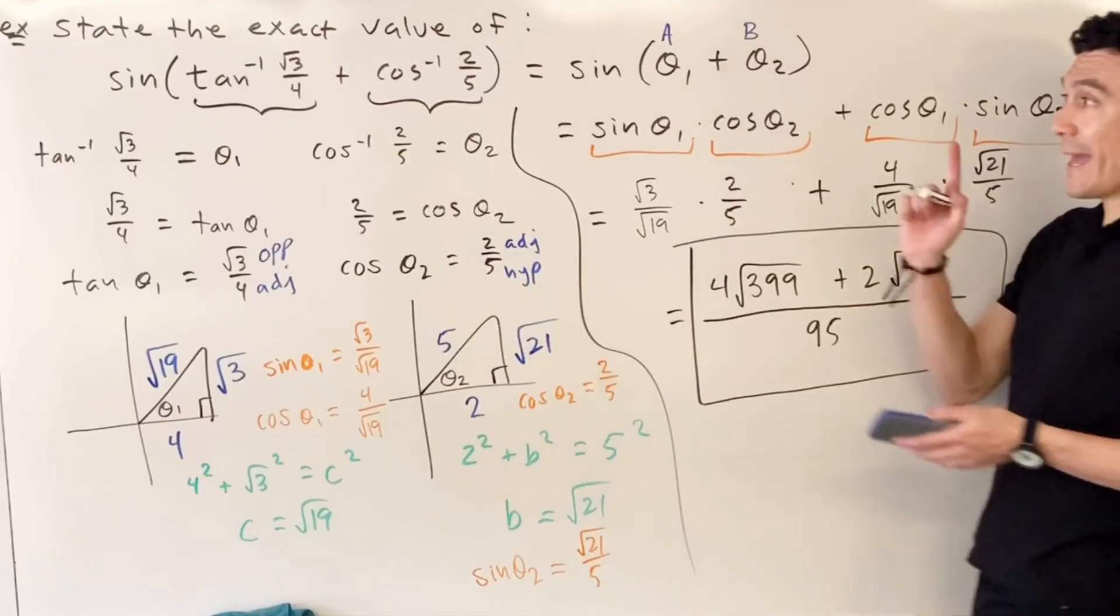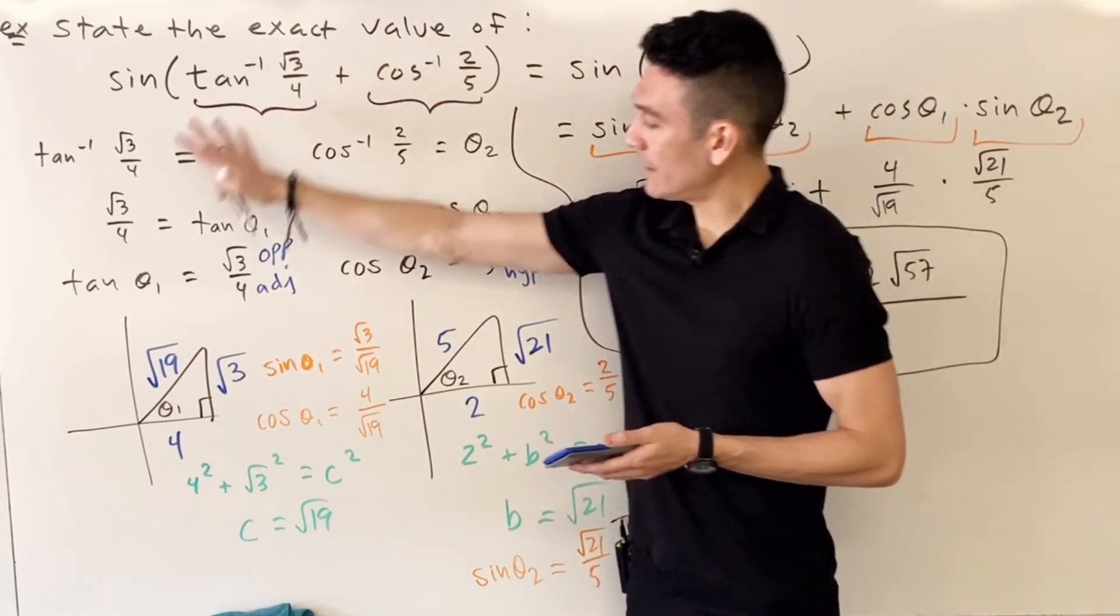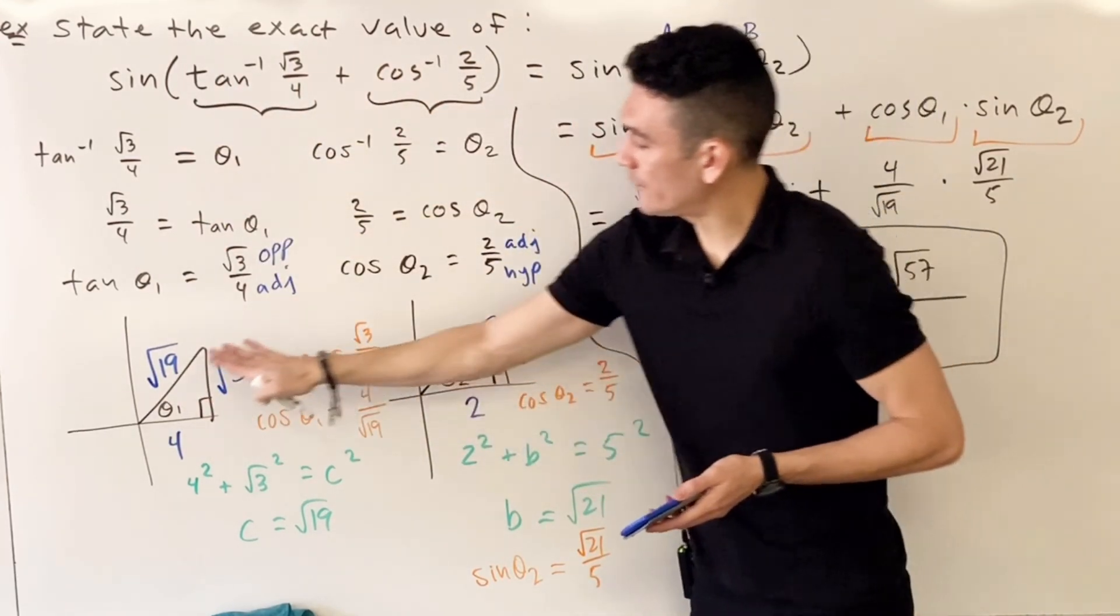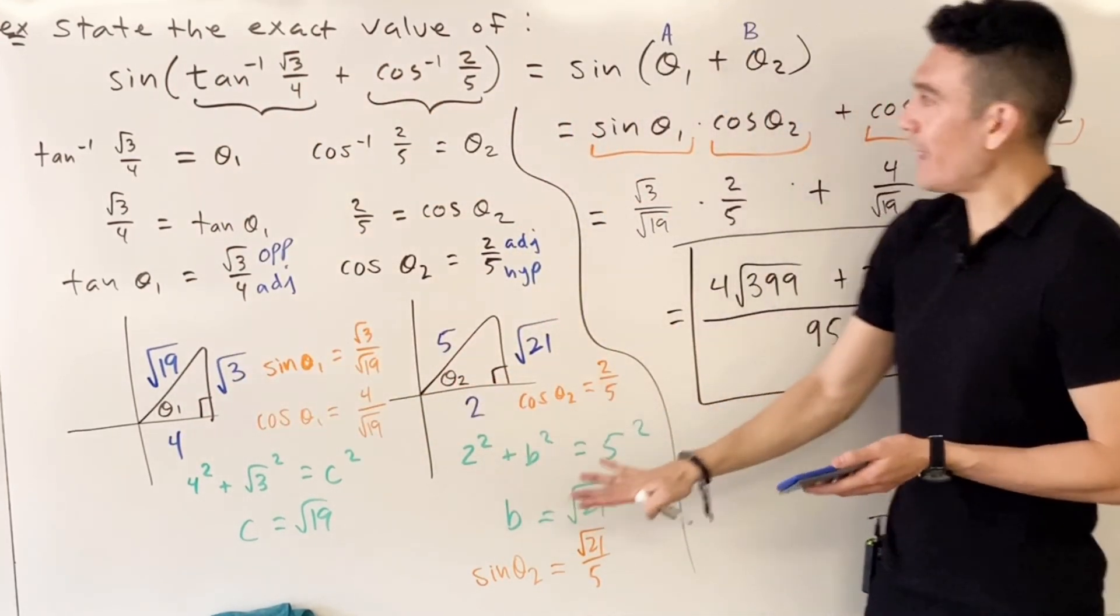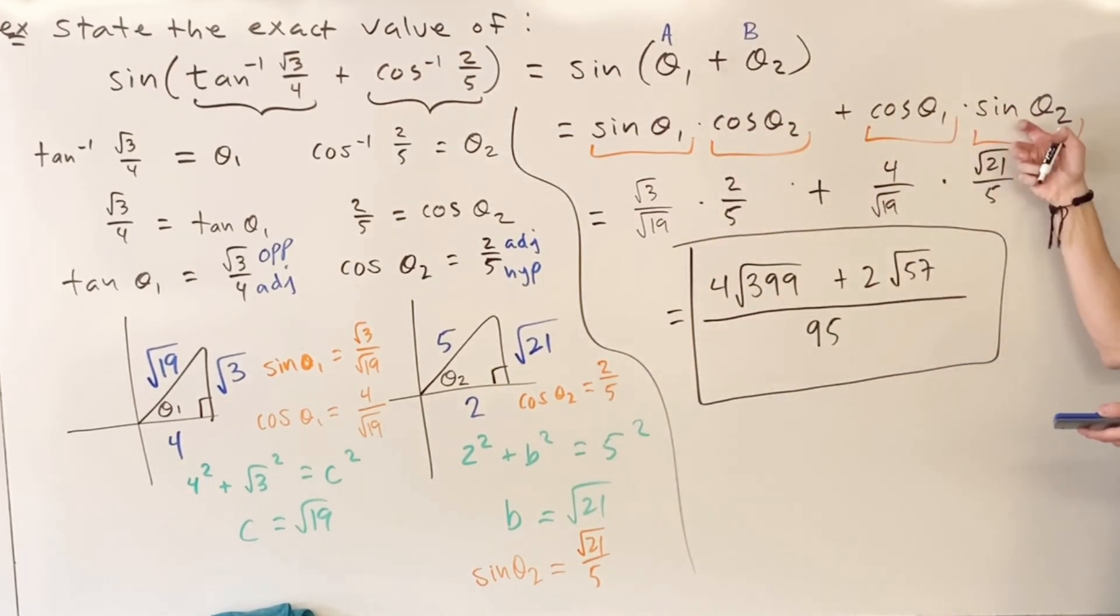So for an exercise like this, call this theta one and theta two, you'll have the creation of two triangles, and then you use your trig identities, and then you'll have four individual pieces, and then Casio takes us home.